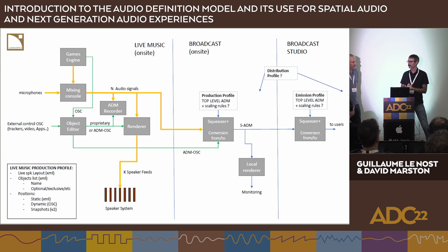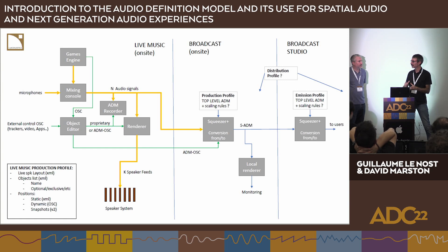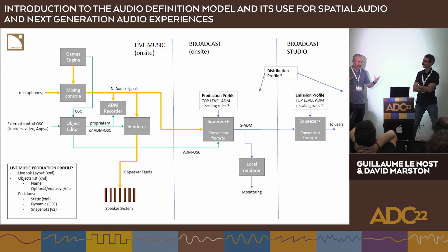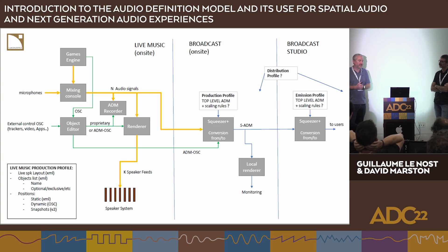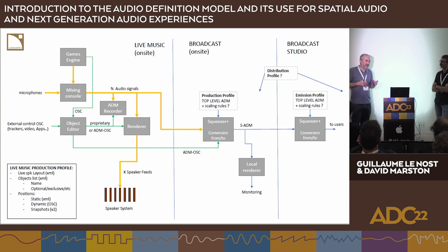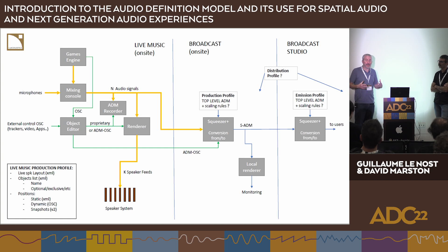There are still some question marks — it's still a work in progress. At the EBU and ITU, work is ongoing on defining profiles. There's the emission profile mapping to emission codecs like MPEG-H and AC-4, while a production profile is aimed at the left-hand side of the chain with a broader scope, allowing for more objects and more complexity. The key challenge is making it easy to map between the two. Input is needed from companies that design production tools, to push it in the right direction and ensure no required features are missed.